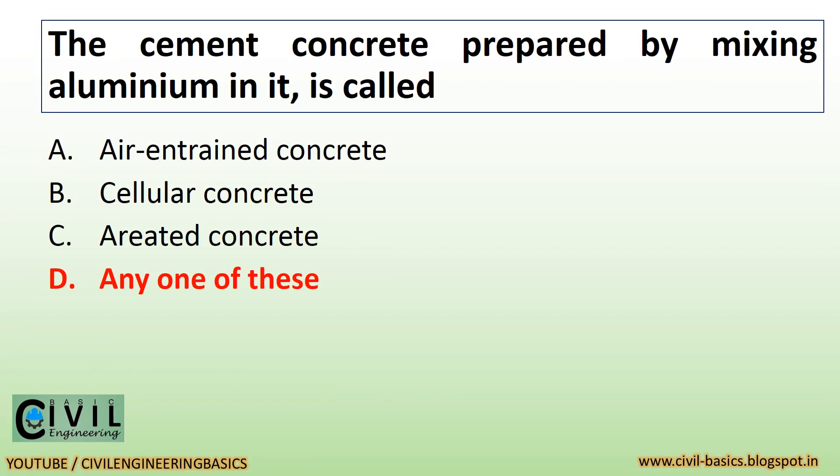The cement concrete prepared by mixing aluminium in it is called air-entrained concrete, cellular concrete, or air-heated concrete — any one of these.